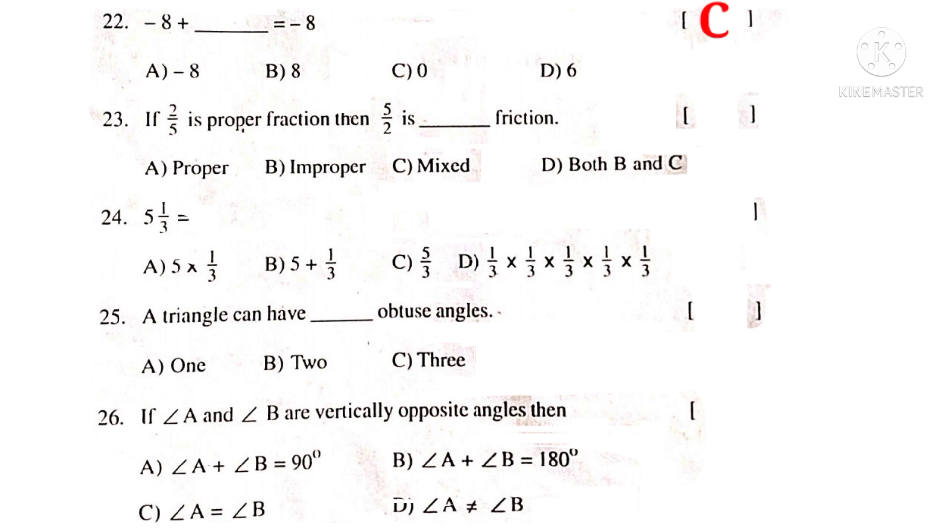23rd. If 2 by 5 is a proper fraction, then 5 by 2 is a dash fraction. Numerator is greater than denominator, so it is an improper fraction. But on dividing, it can also be converted into mixed fraction. So, it is both B and C. So, the correct choice is D.